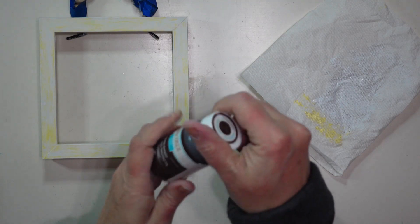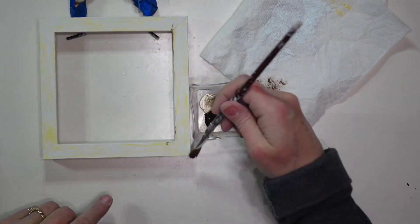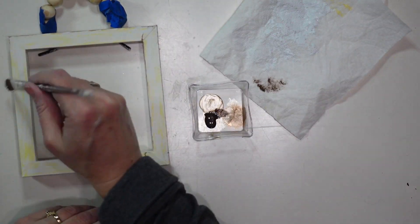And then I am going to take a little bit of Antique Wax from Waverly and I am going to dry brush a little bit over the frame to give it that worn antique look.